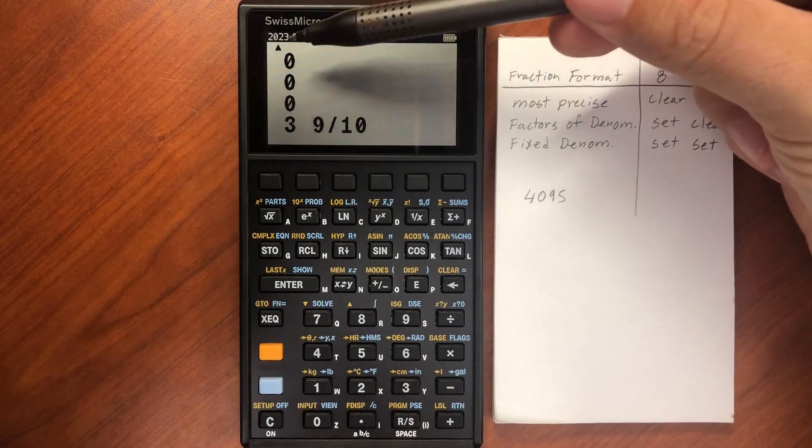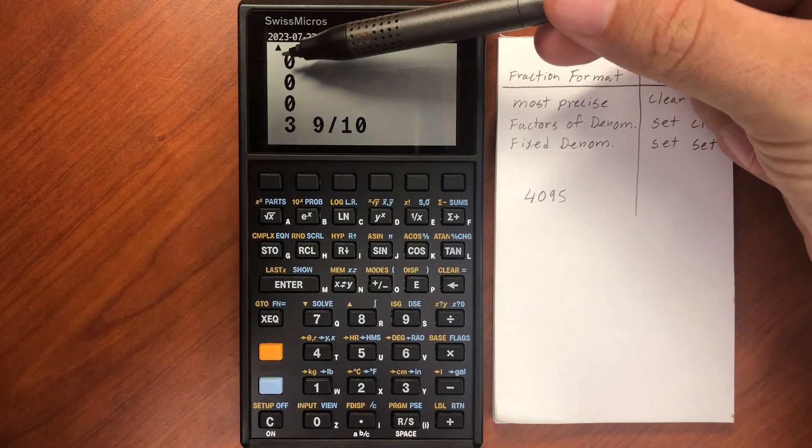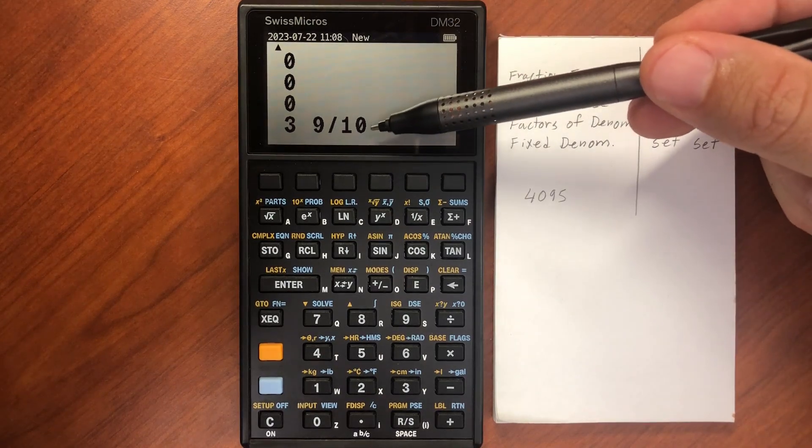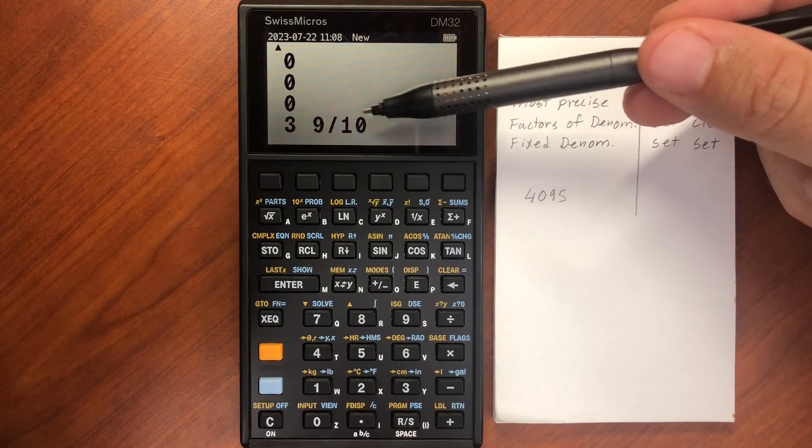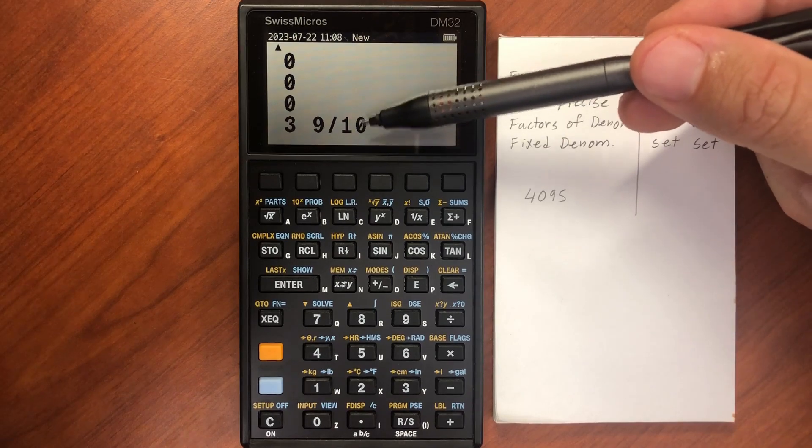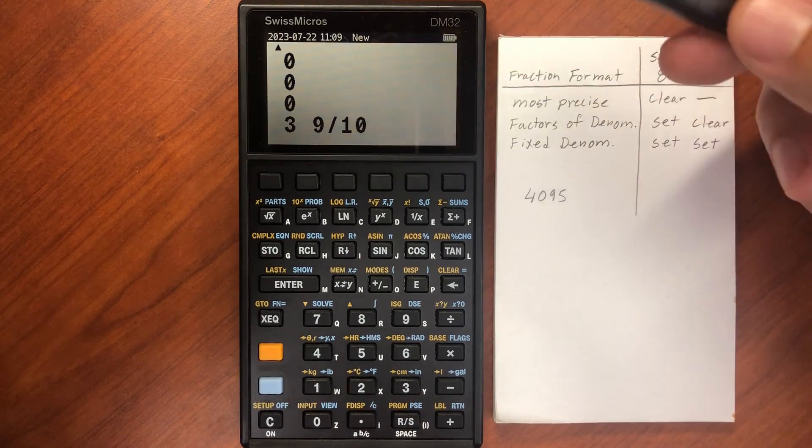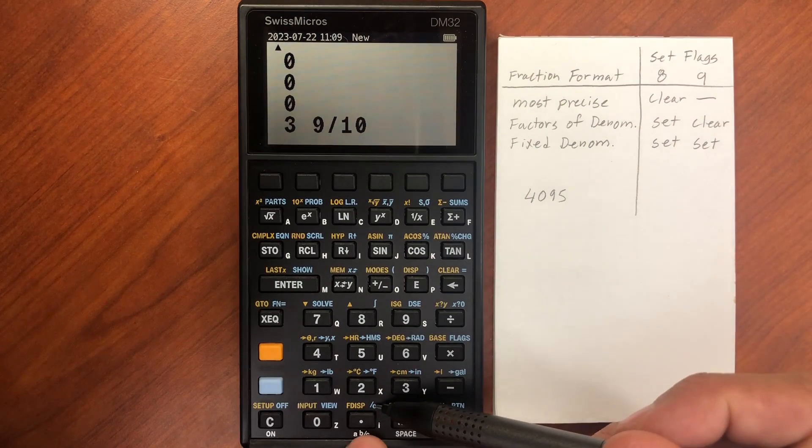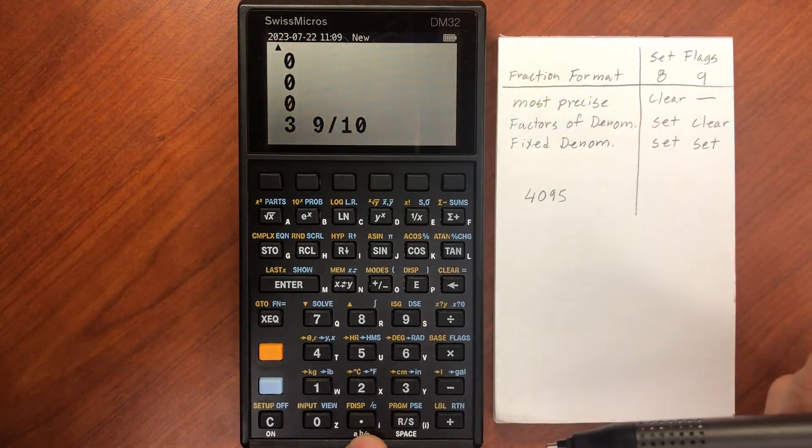Now this little enunciator up here is telling me that the actual value is above what is being displayed here. This is set right now to 9/10. Actually, let me go into that—this slash C sets the base. So right now my base is set to tenths.